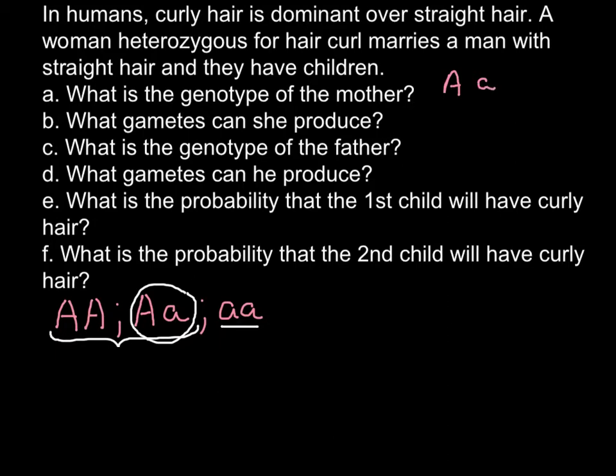Question B: What gametes can she produce? These two alleles may segregate during meiosis into capital A and small a. So she can produce two types of gametes: one with capital A and one with small a.